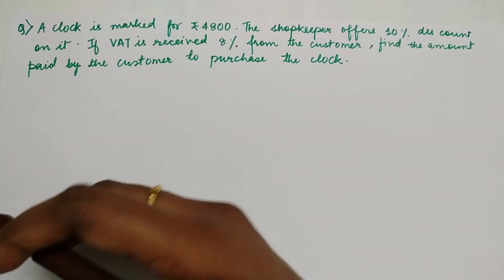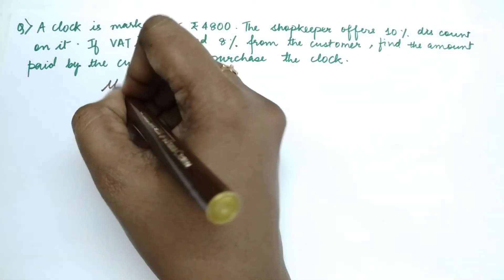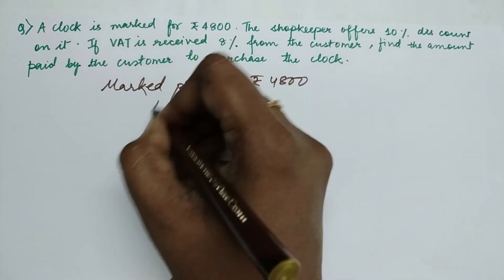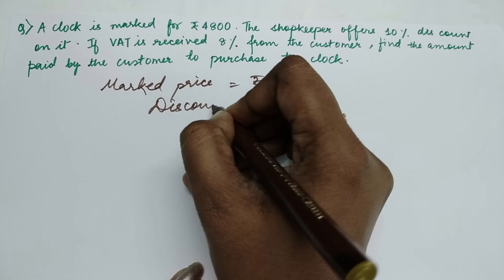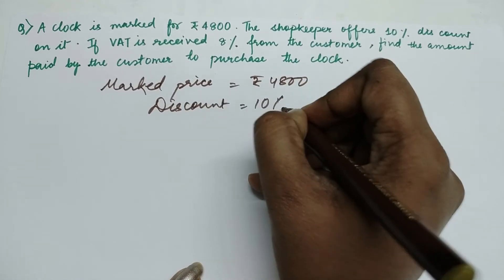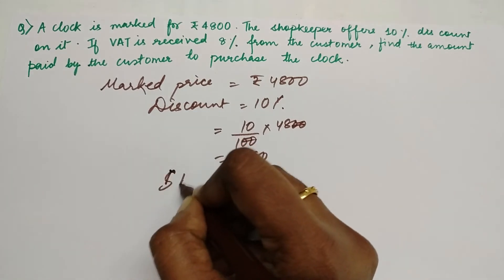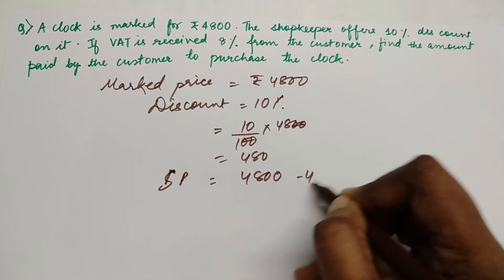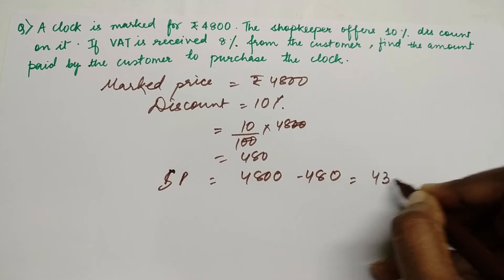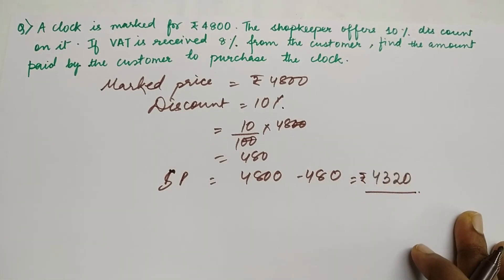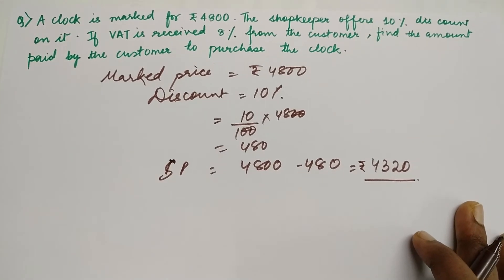So marked price here of the clock is ₹4,800. Discount is 10%, and discount is going to be deducted, so selling price for the customer which he is going to receive is ₹4,320. This is the price that the customer has to pay, that is the net sale price we can see.